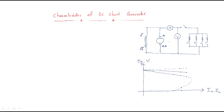To study the characteristics, we start with some load connected. For shunt machines, the field current is always constant — this is the important point. We now need to discuss what happens when the armature current increases.